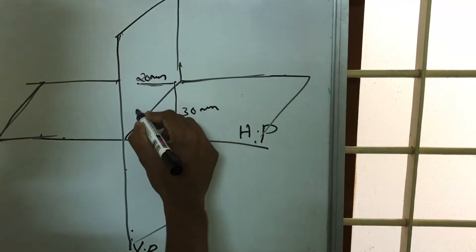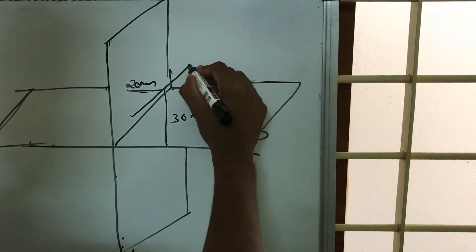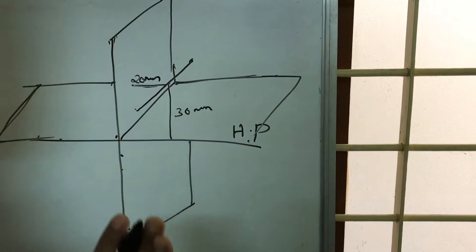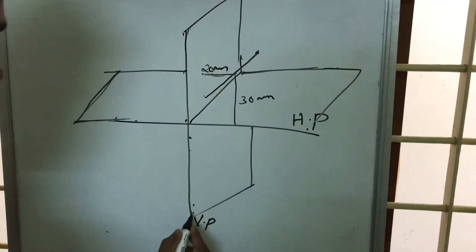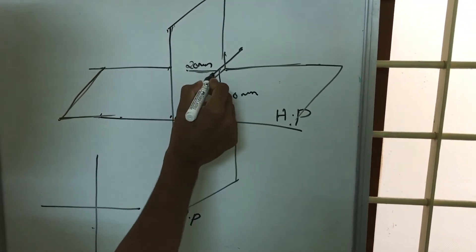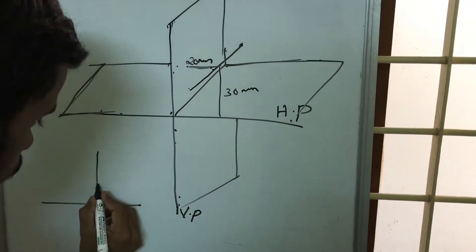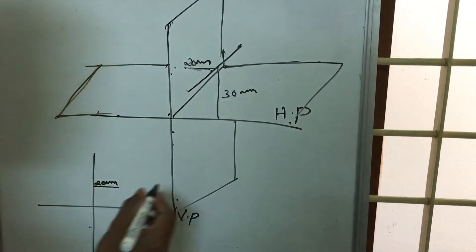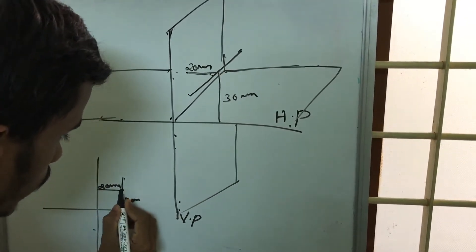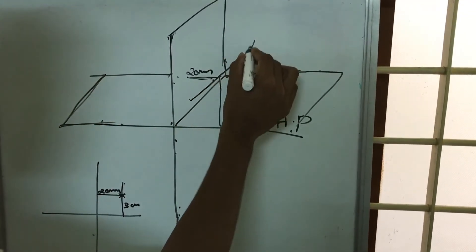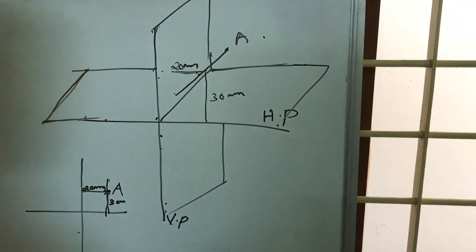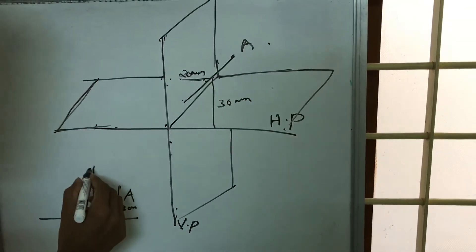This point is located on a line parallel to both the horizontal plane and vertical plane. We simply draw these two lines: vertical plane and horizontal plane. The point is 20mm in front of the vertical plane and 30mm above the horizontal plane. Point A is located at this position. Now we project it into the horizontal plane and vertical plane.